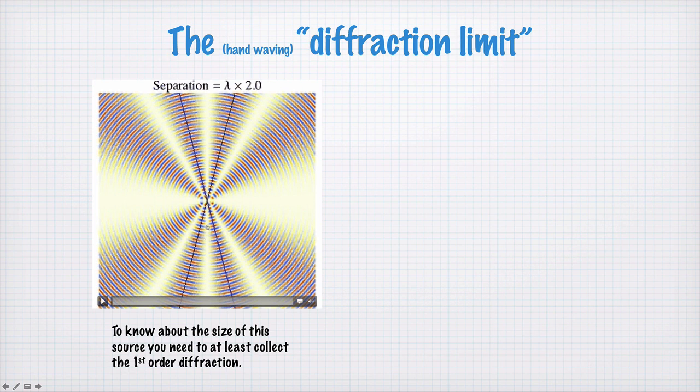In particular, on the axis here, so these two sources are horizontally next to each other, on this axis right through the middle you have destructive interference because the path length will be the same to each of the sources. Along these black lines you have constructive interference. I'm going to call this the first constructive interference order.